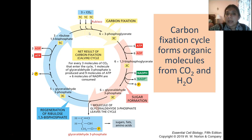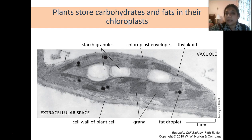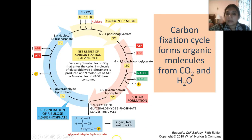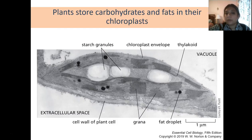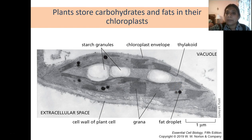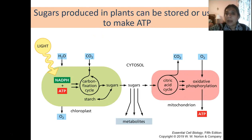The glyceraldehyde-3-phosphate produced is used to create sugars in the form of glucose, as well as fats and amino acids. Throughout the chloroplast you will actually see starch granules forming, which is the plant's way to store carbohydrates, and fat droplets forming where they store fats for energy. Sugars produced in the plants have to be either stored or used immediately to make ATP.